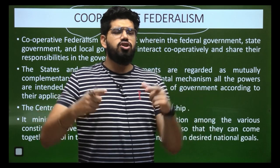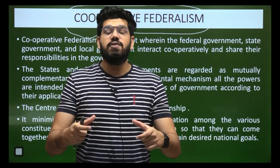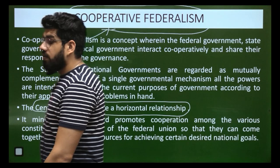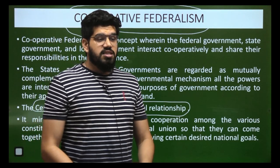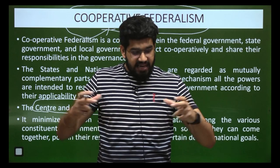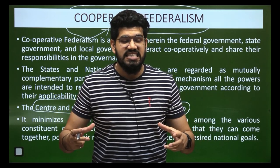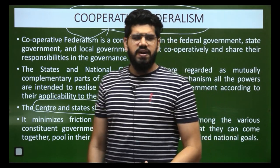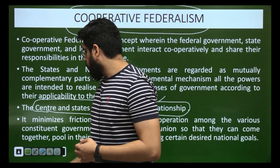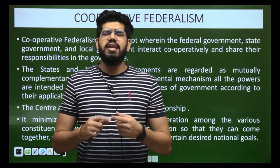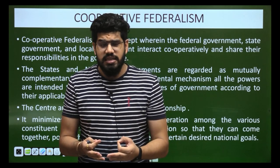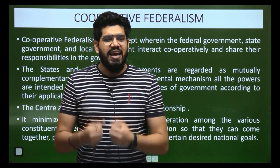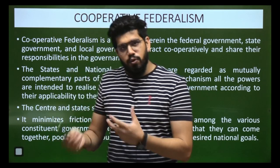In cooperative federalism, the centre and the state are considered to be at equal parlance — on an equal platform — sharing a horizontal relationship where no one is above the other, with equality between centre and state. The entire purpose is that it should not lead to any friction or conflict between the centre and state, and this must be ensured by both administrations.